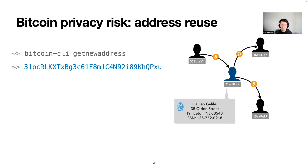Today, arguably one of the biggest privacy risks in cryptocurrencies like bitcoin is that of address reuse. Basically, if a user only uses a single address for all of their activity, then as soon as someone is able to associate their real identity with their bitcoin address, all of their transaction activity on the bitcoin blockchain has been exposed and linked to them.